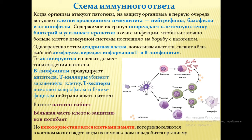Одновременно с этим есть такие клетки иммунной системы, как дендритные клетки. На слайде вы можете увидеть эту клетку — она имеет такие щупальца. Она поглощает патоген и спешит в ближайший лимфатический узел, передаёт информацию Т- и B-лимфоцитам. Те активируются и спешат к местонахождению патогена. B-лимфоциты продуцируют антитела, которые распознают антиген и запоминают его.